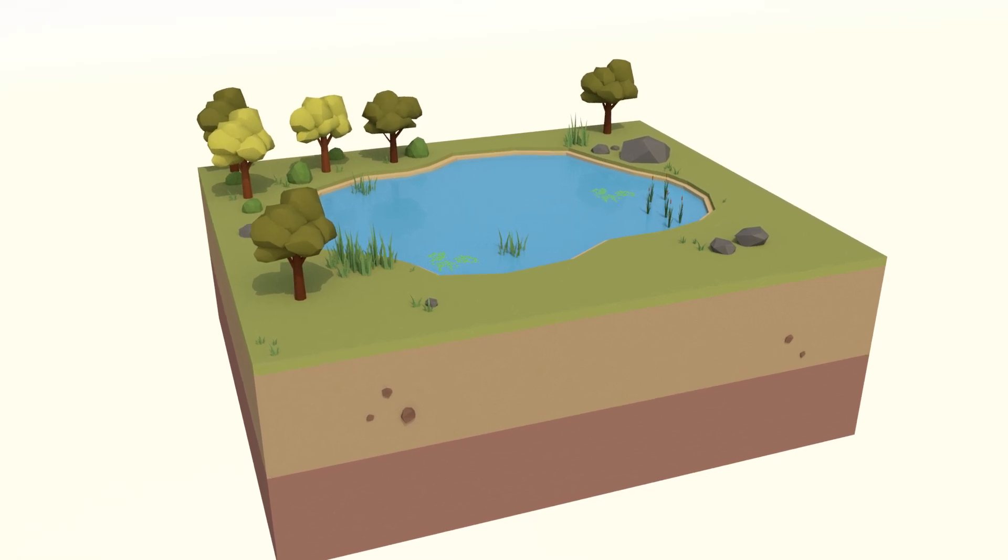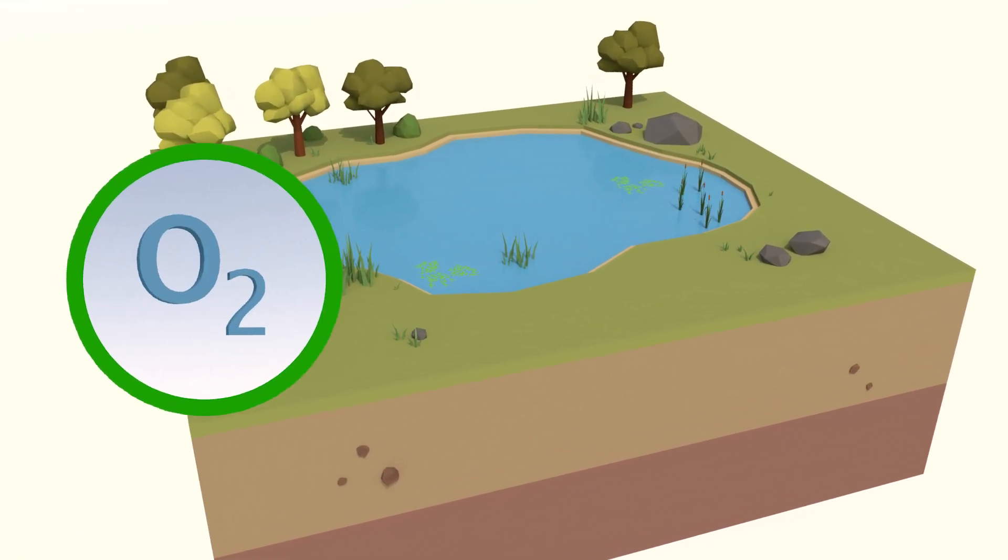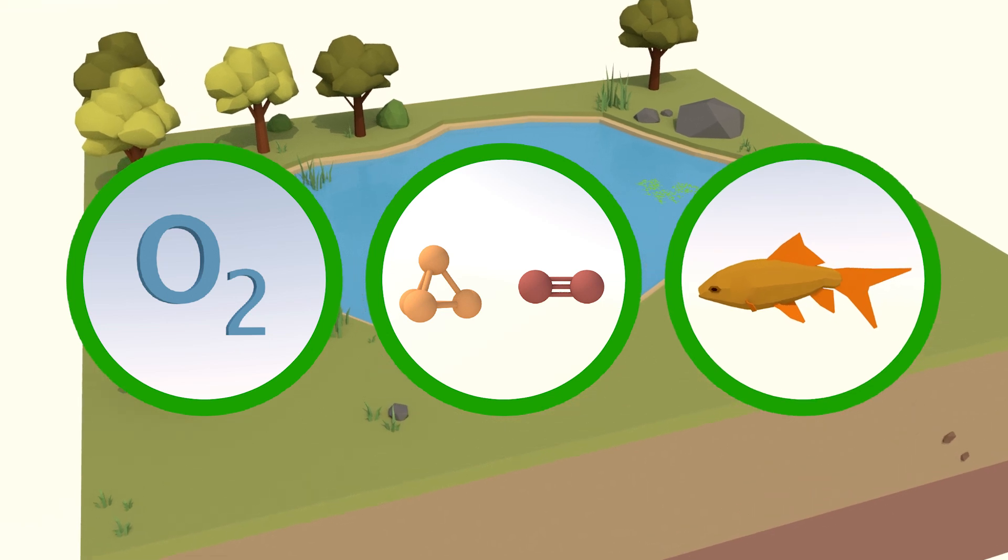Natural bodies of water, like lakes, need a balance of oxygen, nutrients, and life to sustain a healthy ecosystem.